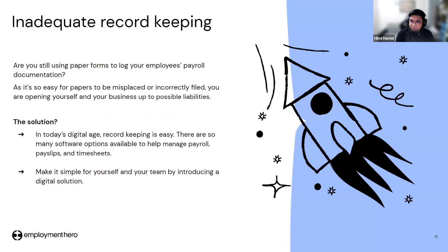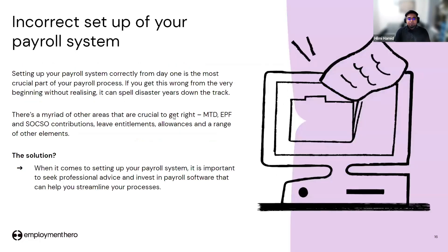Inadequate record keeping is another issue. If you use traditional methods like paper or Excel, the calculation is not automated — you can make mistakes calculating EPF, SOCSO, or PCB. Because of this, you can get penalties for incorrect PCB or EPF payments. To avoid this, use a payroll system that makes record keeping easy. There are many payroll software solutions on the market that can help manage payroll, payslips, and timesheets.